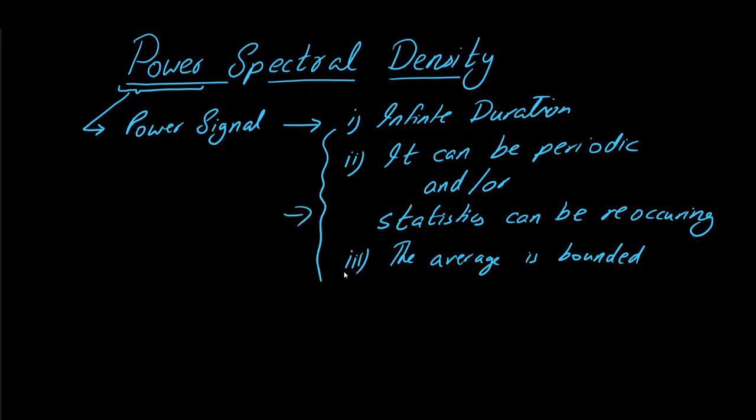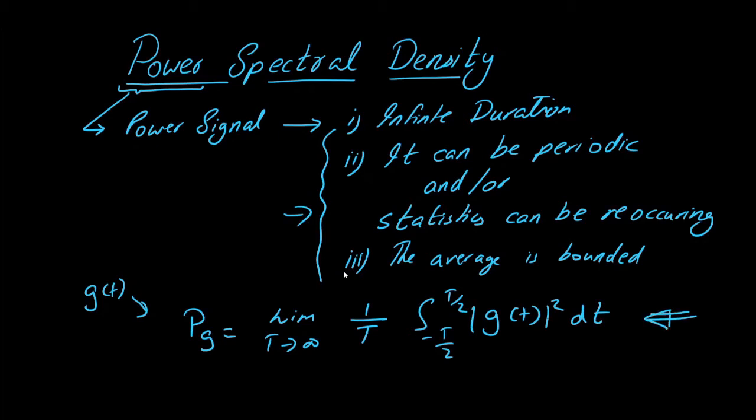With these three conditions, given that we have a signal g of t, if we are to find the power of this signal, we will take a limit and say t tends to infinity 1 by t, integral from minus t by 2 to t by 2, g of t whole square dt. This will define the power of a given signal.